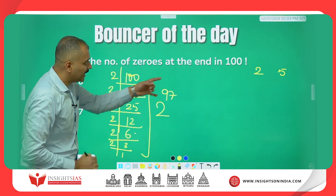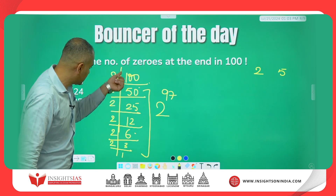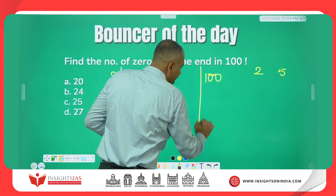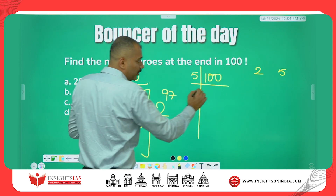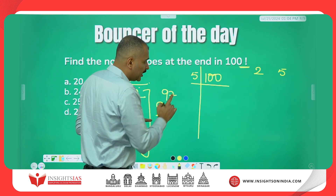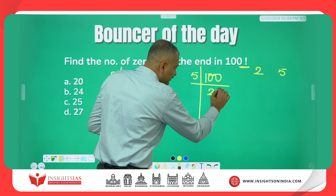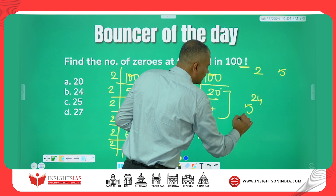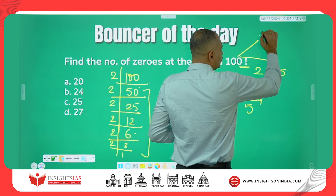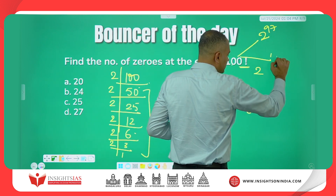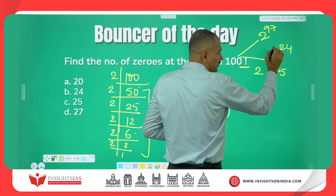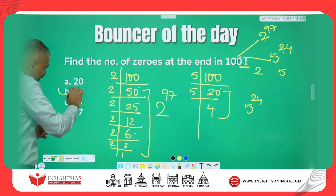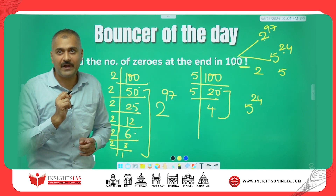How to find the number of twos in 100 factorial: divide by 2. Similarly, how to find the number of fives: divide 100 by 5 — this is 20 times, again divide by 5 gives 4 times. So 24 fives are there. In 100 factorial, twos are 97 and fives are 24 in number. If there are 24 fives and 97 twos, you will only get 24 zeros. This is the total number of zeros in 100 factorial.